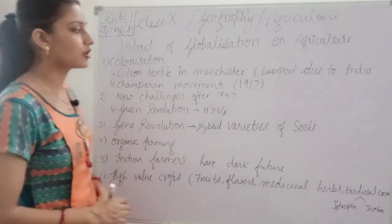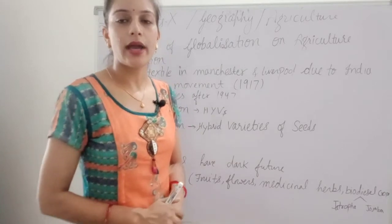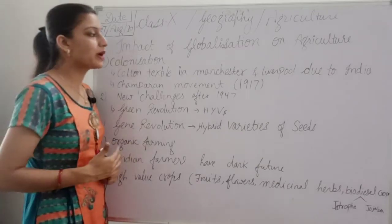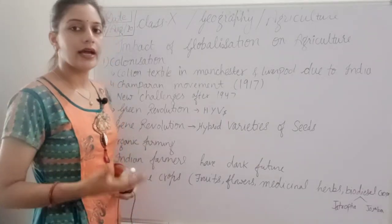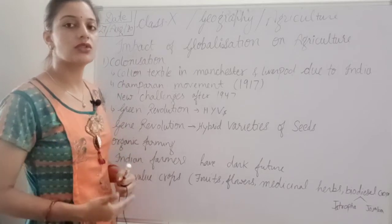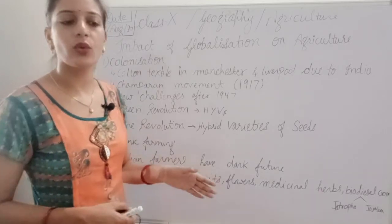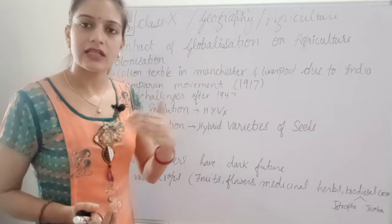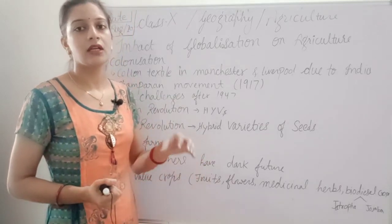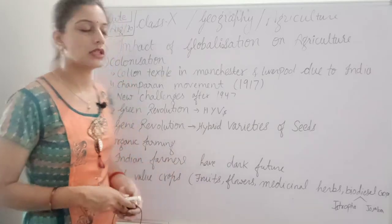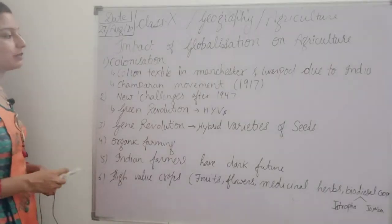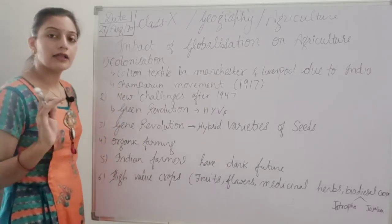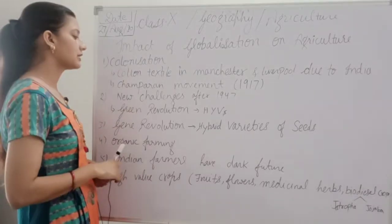We have the example of the Champaran movement, which was initiated in 1917. It happened because at that time farmers were pressurized by producers to cultivate indigo. Indigo cultivation reduces the fertility of the soil even though it requires very fertile soil to grow. Frequent cultivation of this crop causes the land to lose its fertility, making land degradation one of the bad effects on Indian land.